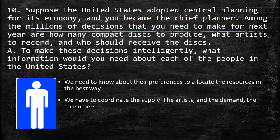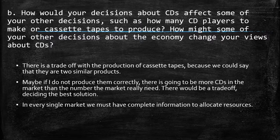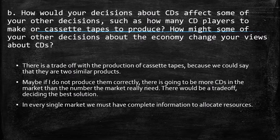The second point is: how would your decisions about CDs affect some of your other decisions, such as how many CD players to make or cassette tapes to produce? According to the artists who are going to produce and create music, I need to provide the resources of CDs. I have to know how many CDs to produce that are going to be recorded. So in this case, the artists are going to be the demand side, and as a central planner, I am going to be the supplier of the CDs that they are going to record.